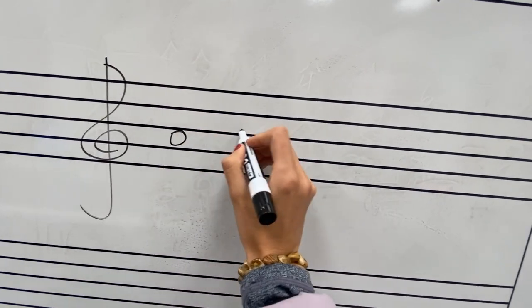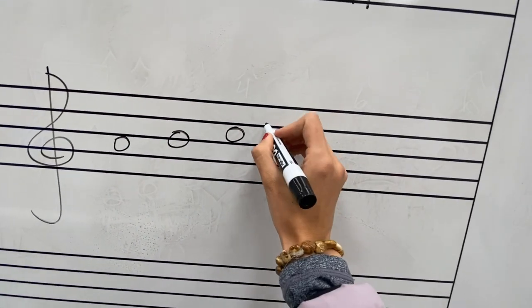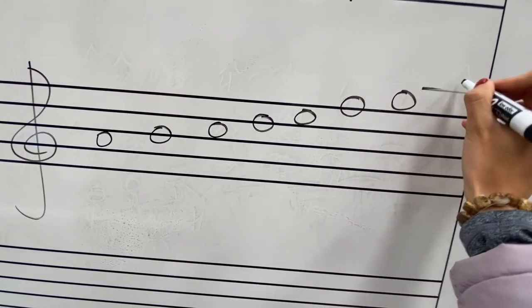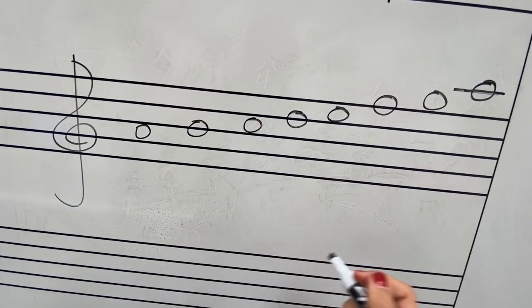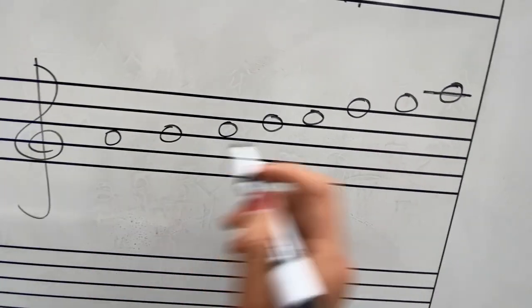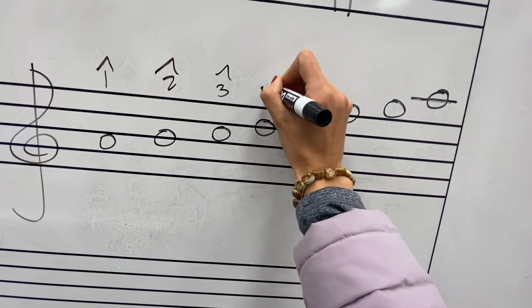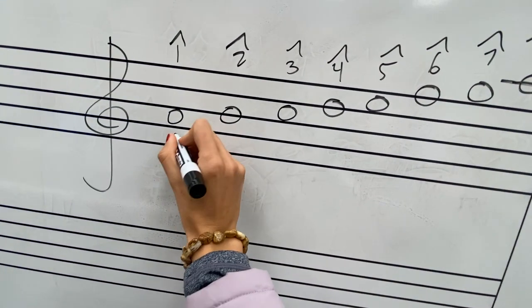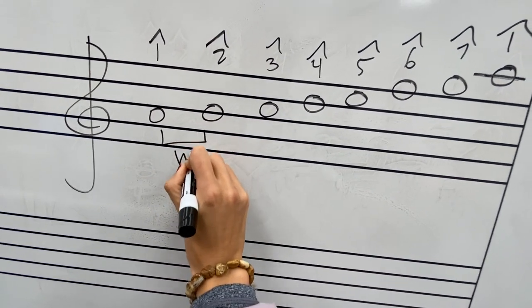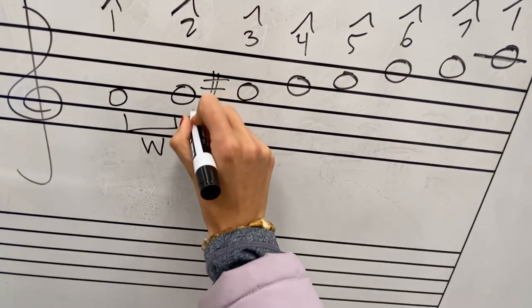So we have A. I'm just going to write out the notes — all scales can only have one of each note, you can't skip around. You can't have both an F and an F sharp, or a G and a G sharp — you can only have one of each letter. So A to B — is that a whole step? Yes, that's a whole step. How about B to C? On the piano B to C is a half step, so what do we need to do? We need to raise that C to a C sharp. Now we have a whole step.